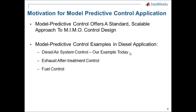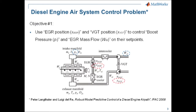At this point I'd like to turn it over to my colleague Rong Chen. Thanks Pete. My name is Rong Chen, a developer at MathWorks working on the Model Predictive Control Toolbox. The diesel engine air system control problem is a MIMO problem. The two manipulated variables are EGR position and VGT position, controlling two plant outputs: boost pressure and EGR mass flow. We built this diesel engine plant model in GT Power based on the paper published by Peter and Luigi at IFAC 2008.